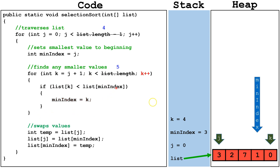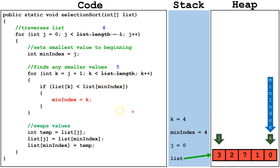We get to the end of the internal for loop and increment k by 1. Then we check is k still less than 5. It is, so we continue the internal loop. We check is list index k smaller than list min index. It is, so then we set min index equal to k. We get to the end of the for loop and increment k by 1. We see k is now pointing out of bounds. We check is k less than 5 — k is no longer less than 5, so we terminate the internal for loop. These next three lines of code will swap the value that j is pointing at, j being the first index in the unsorted portion, with the value min index is pointing at.